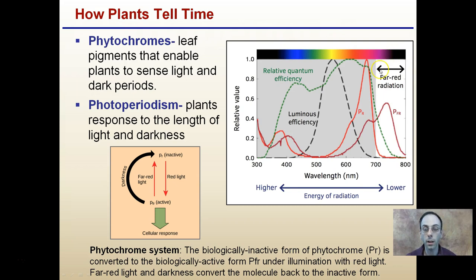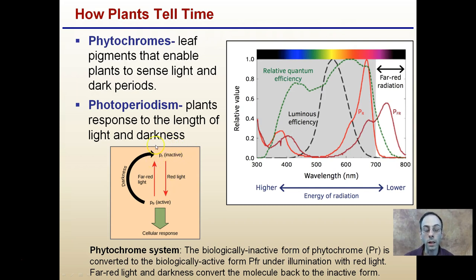Far-red light and darkness convert the PFR molecule back to the inactive PR form. Far-red light refers to light beyond about 700 nanometers — getting out of the range of normal visible light — and it has a little bit lower energy. The active PFR form, in periods of darkness, will gradually transfer back to the inactive PR form. Far-red light can speed up that process, while red light can quickly convert the inactive form to the active form, initiating a cellular response.